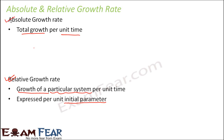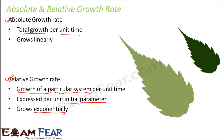Absolute growth rate grows linearly — it increases with time — whereas relative growth rate grows exponentially, because when you compare growth to the initial parameter the rate appears much larger. We will now take the same leaf example and use calculations to show how to calculate both absolute and relative growth rate.